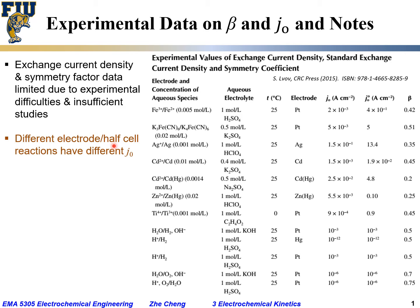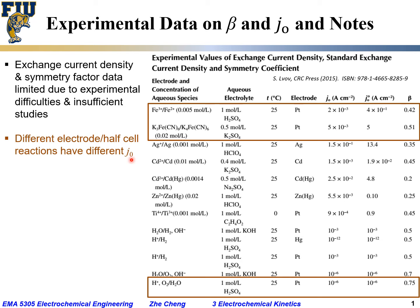What you would notice first is that different electrode reactions, or different half-cell reactions, would have different J0 exchange current density. So let's take a look at some examples. We would have Fe3+/Fe2+, that's one redox pair.